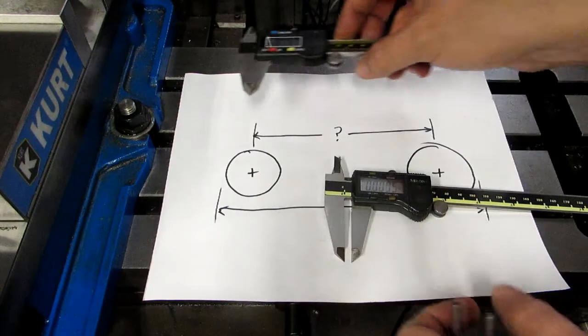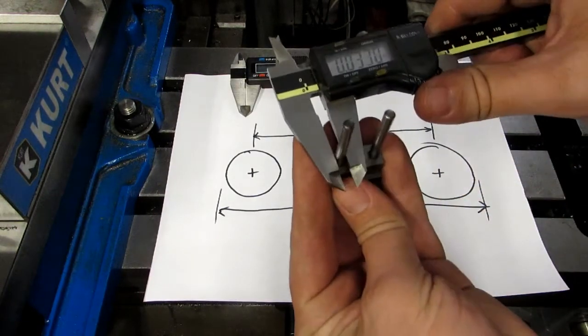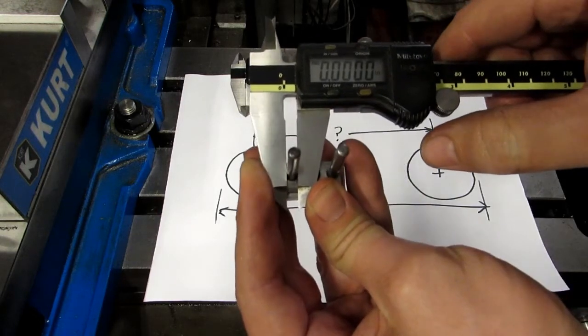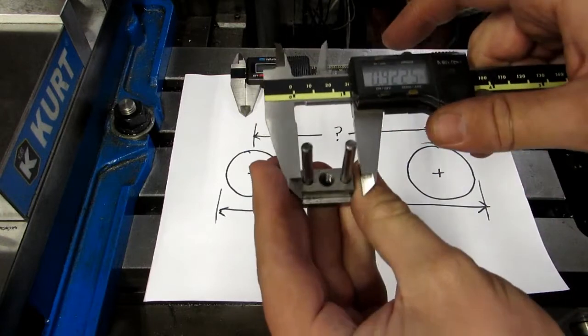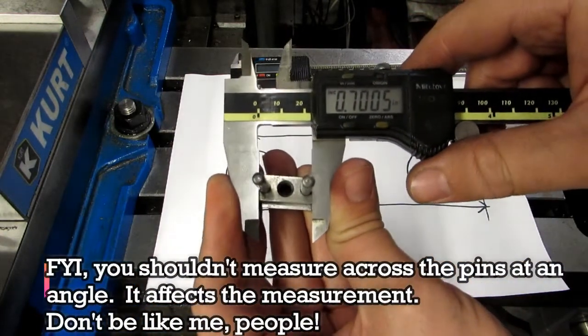Anyway, what we can do - I've zeroed on the pin diameter there, and now what I can do is just measure across the pins and it directly gives me the spacing of the two pins.